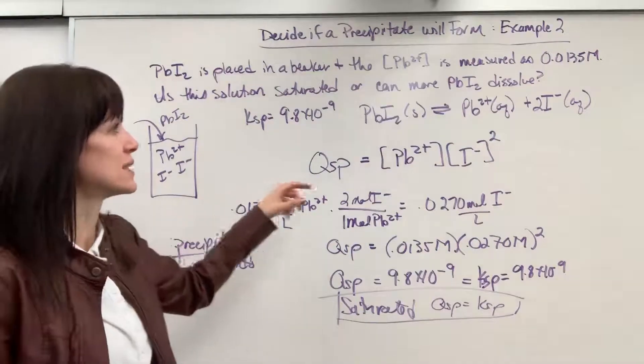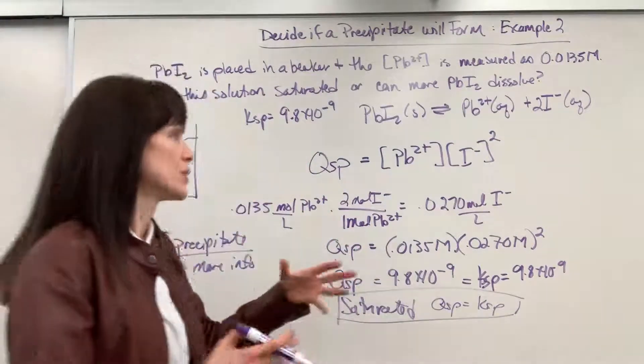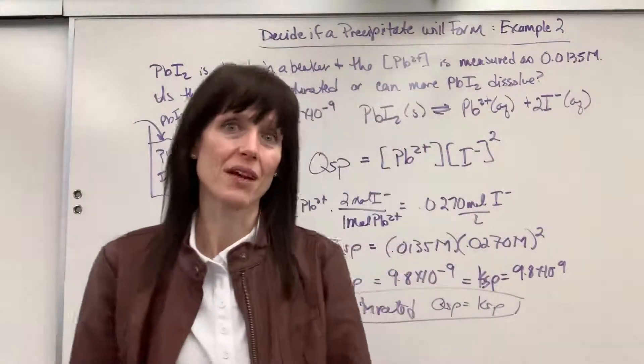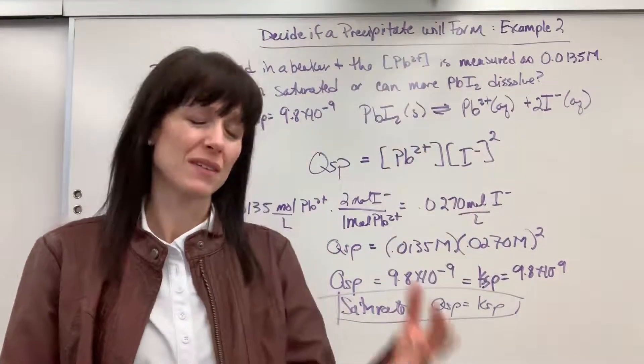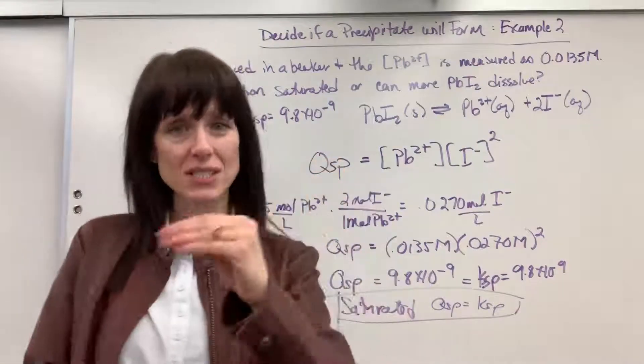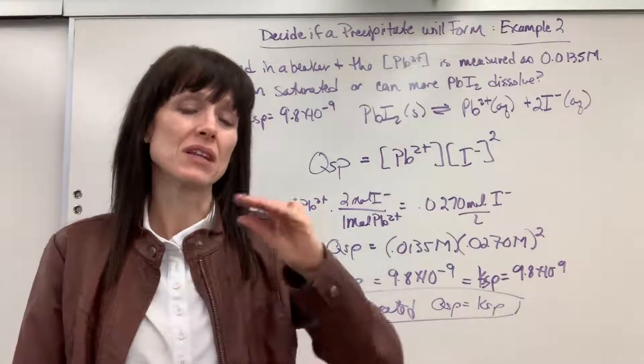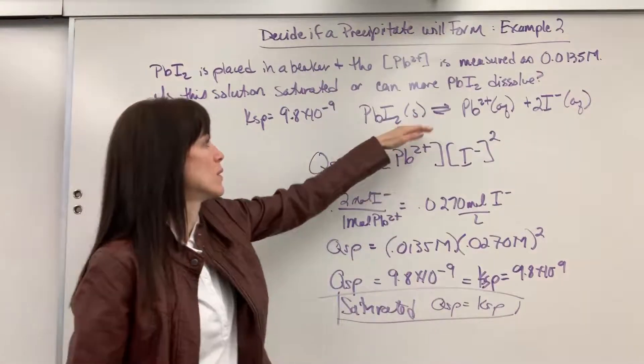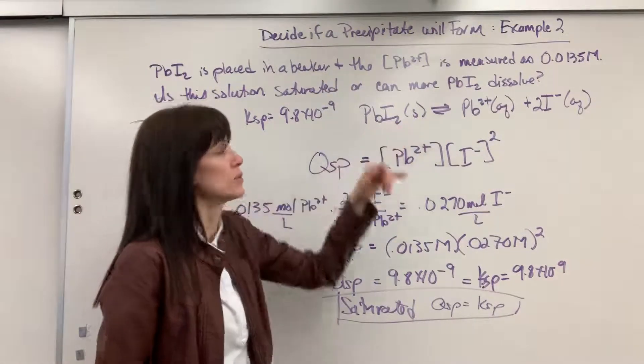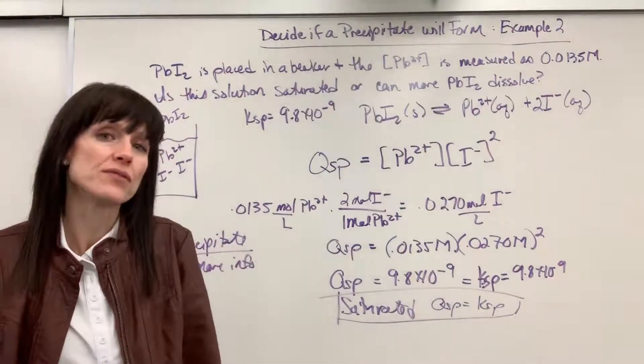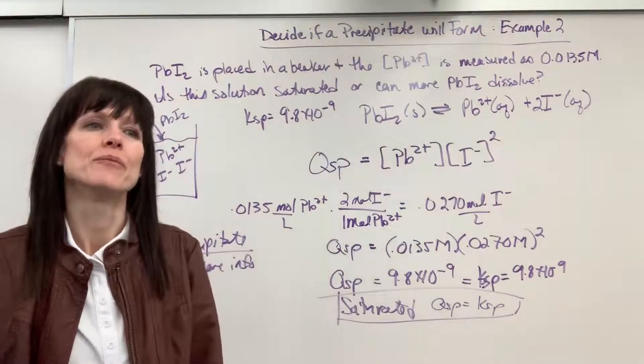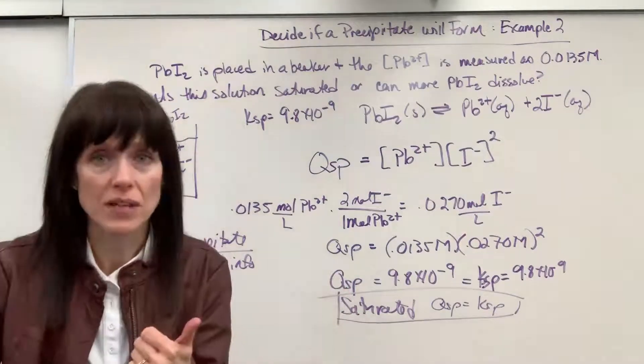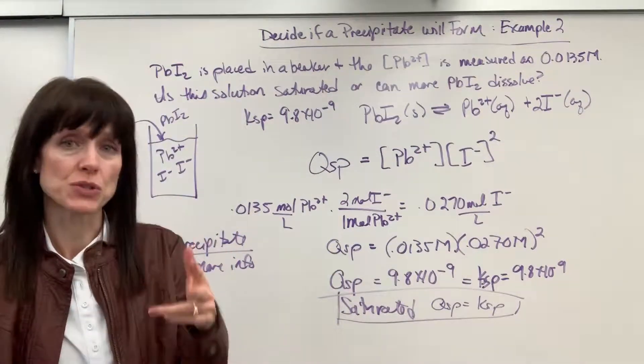They just told us that once they put it in, they took the concentration of the lead, and that lead is 0.0135. Well, it's saturated. So either they put in the exact amount just to saturate it, or they put even a little bit more in. Once it hits saturation, remember it can't make any more, it will go in reverse, and it will produce a solid. So not enough information to say if it's precipitated, but we can definitely say it can't dissolve anymore. It's saturated. It's reached equilibrium.